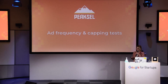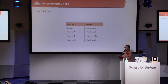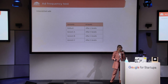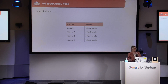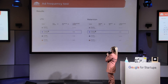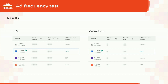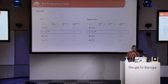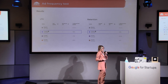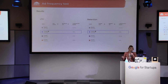Now, the ad frequency and capping test. For interstitial ads, this is the level-based ad frequency test. The default variant was to show an interstitial ad after every two levels, and we tested it against three, four, and five levels. We have a clear winner: when we show interstitial ads after three levels, both metrics are better — LTV was better by 63% and retention was also better by 25%. No doubt here — we decided to roll this out to all users.